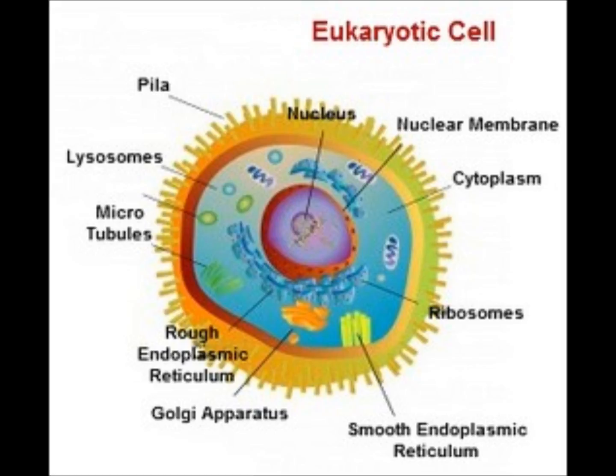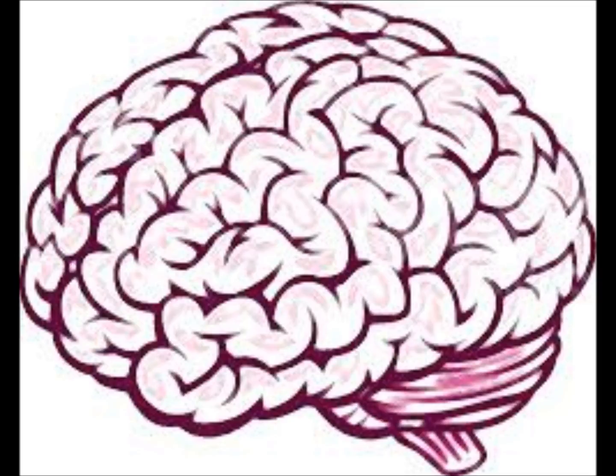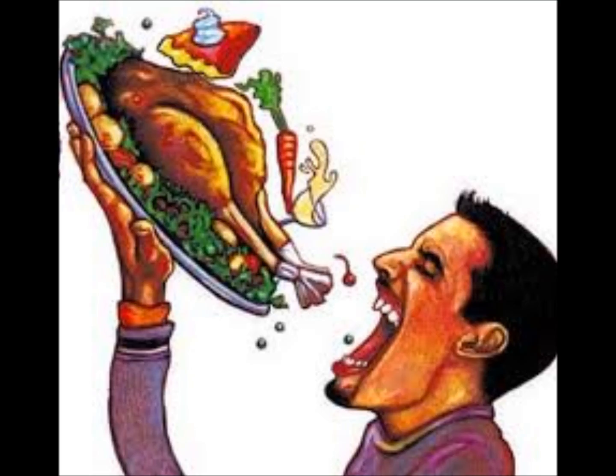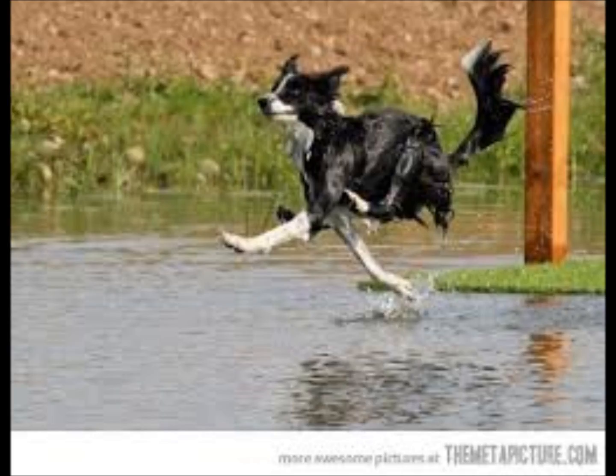We focus on the eukaryotic cell's nucleus. The nucleus acts like the brain of the cell. Like the brain, it controls all of the major functions in a cell. The nucleus controls the eating or energy consumption in a cell. It also controls the cell's movement or how it behaves in the body.